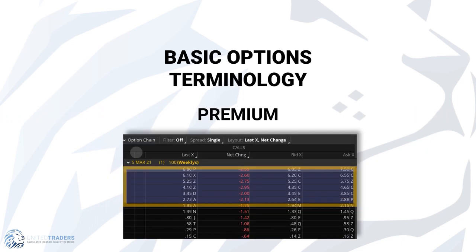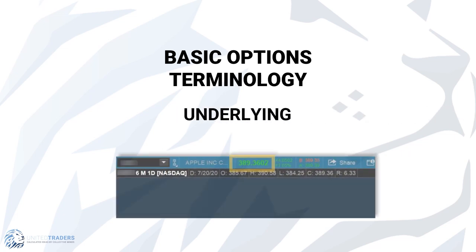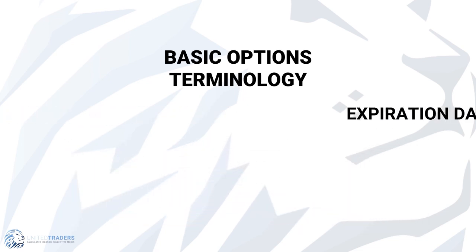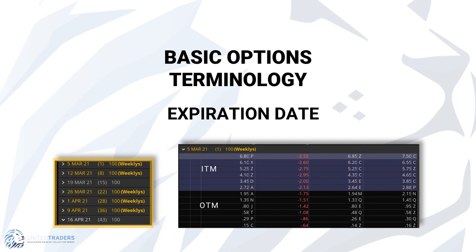Premium is the price that option buyers pay and the amount options sellers receive for the contract. The underlying is the actual stock the option is a derivative of. The expiration date is the date the option contract expires. If the option is in the money, or ITM, a transaction will occur at the strike price. If the option is out of the money, or OTM, the option will expire worthless and be removed from your account.